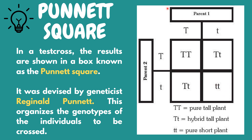Again, this example is another type of monohybrid cross, since the only trait of interest is the height of the plant. The Punnett square helps us to easily organize and identify the genotypes of the offspring.